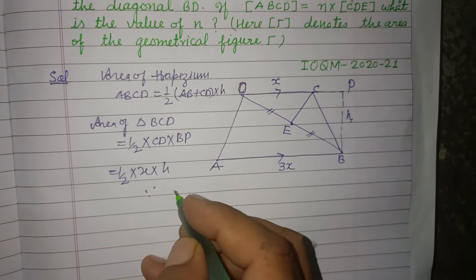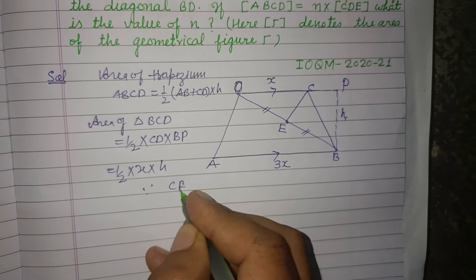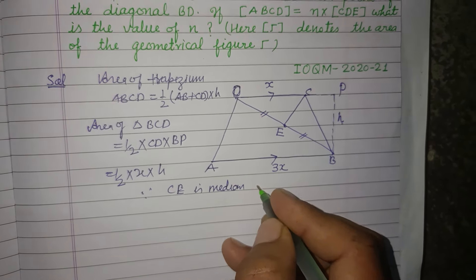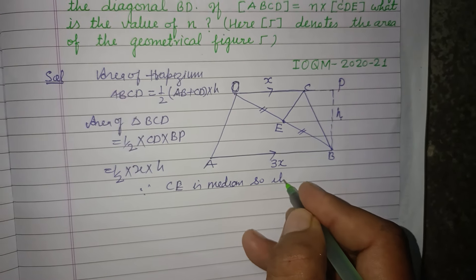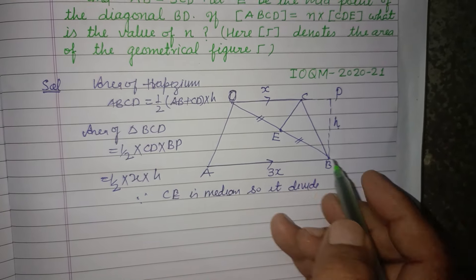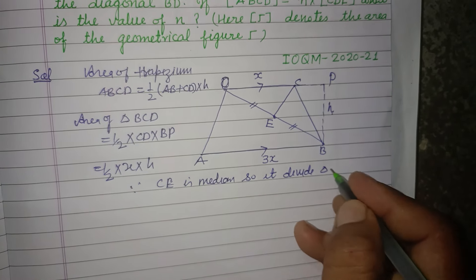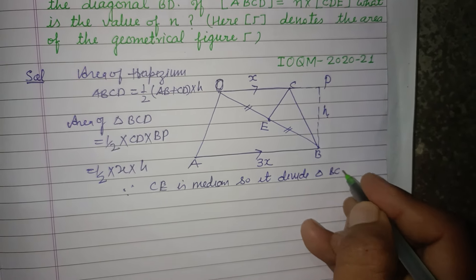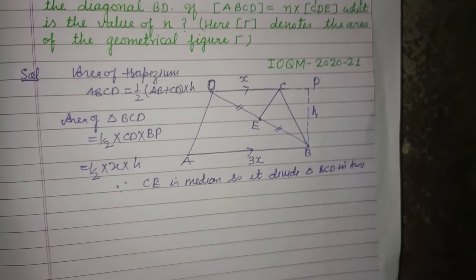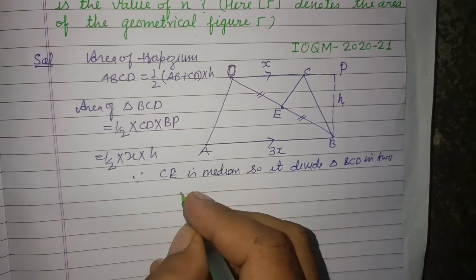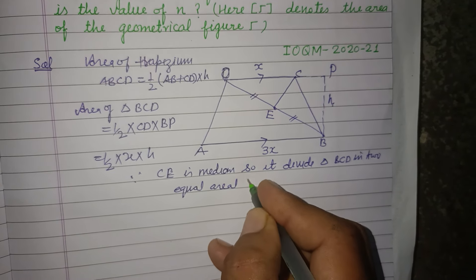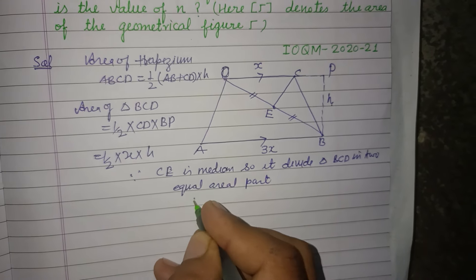Since CE is a median, it divides triangle BCD into two equal parts, into two equal areal parts.